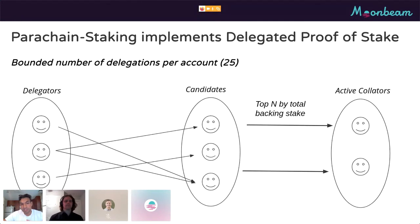It's a very simple implementation. There's a bounded number of delegations per account and delegations have to be above a minimum — five glimmer is the minimum set in our runtime right now. You can have up to 25 delegations. At the start of every round, the top-N candidates by total backing stake — that's the self-bond for the candidates as well as all delegations by their delegators — the top-N are selected as active collators.